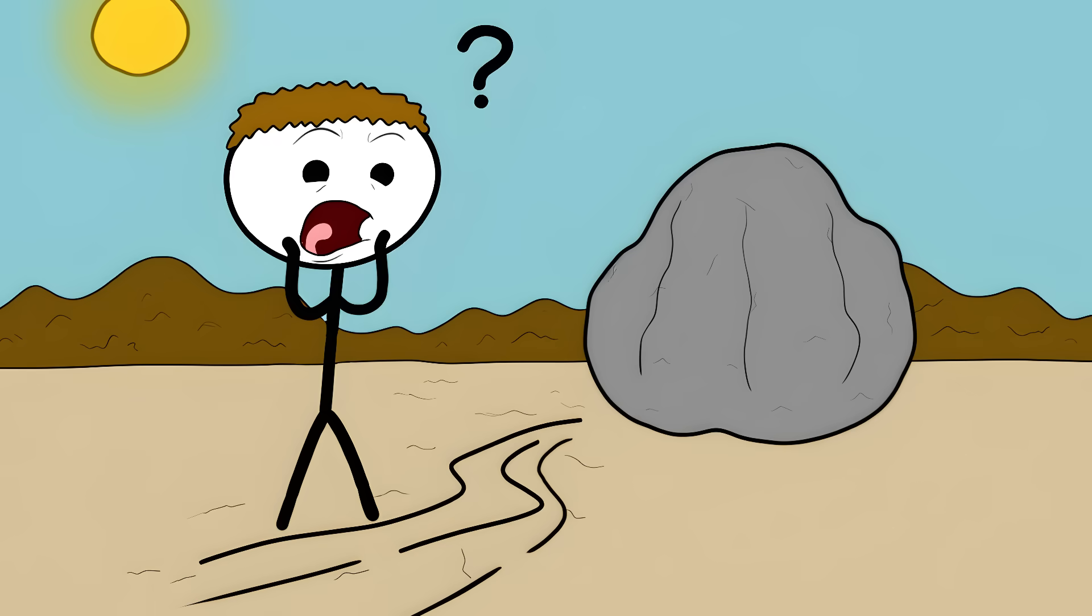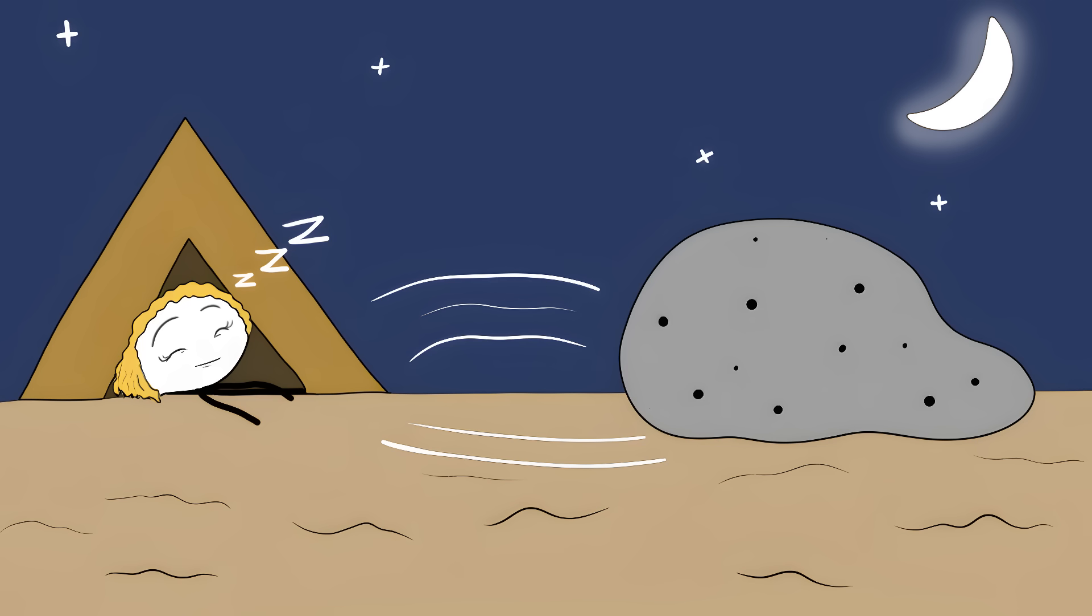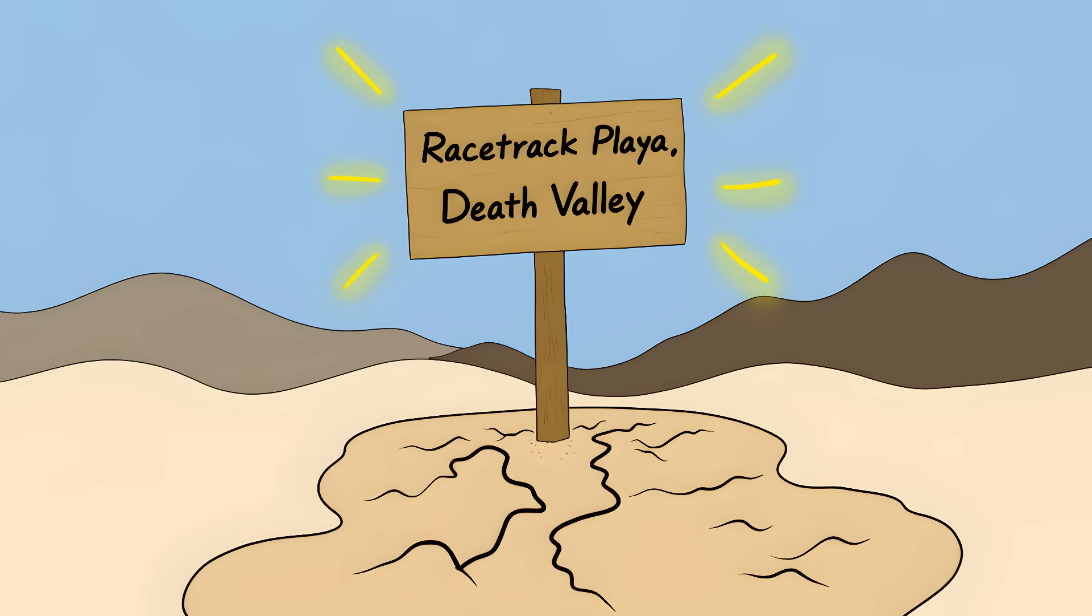Picture this: you are walking through a desert and finding a 700 pound boulder with a trail behind it, as if it dragged itself across the ground when nobody was looking. This happens at Racetrack Playa in Death Valley.